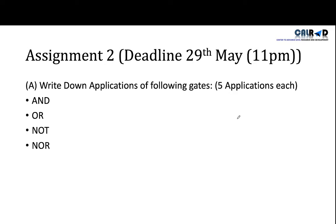You have to write five applications of each gate. Five applications of AND gate, five for OR, five for NOT gate and five for NOR gate. What are the common applications? Like today, we did one application of NOT gate. That is climate control or central heating system. Like this, you have to write five applications for all these gates.